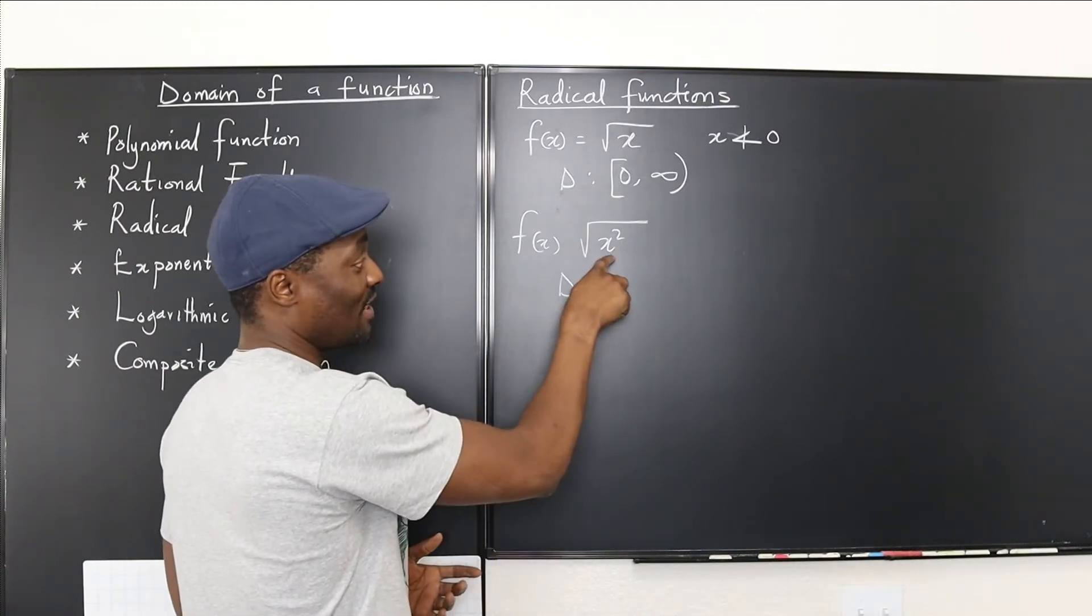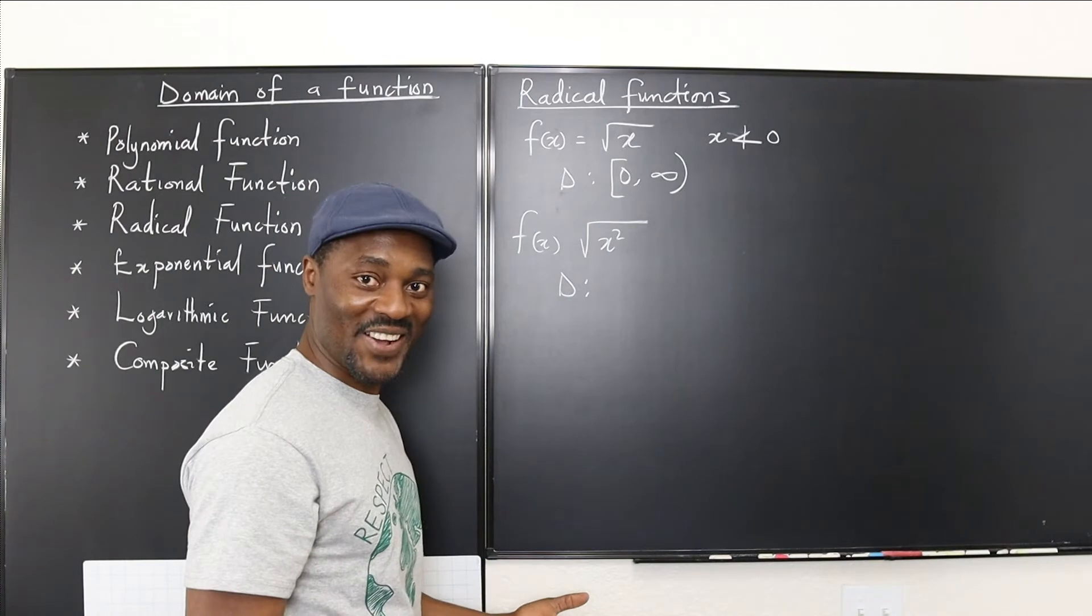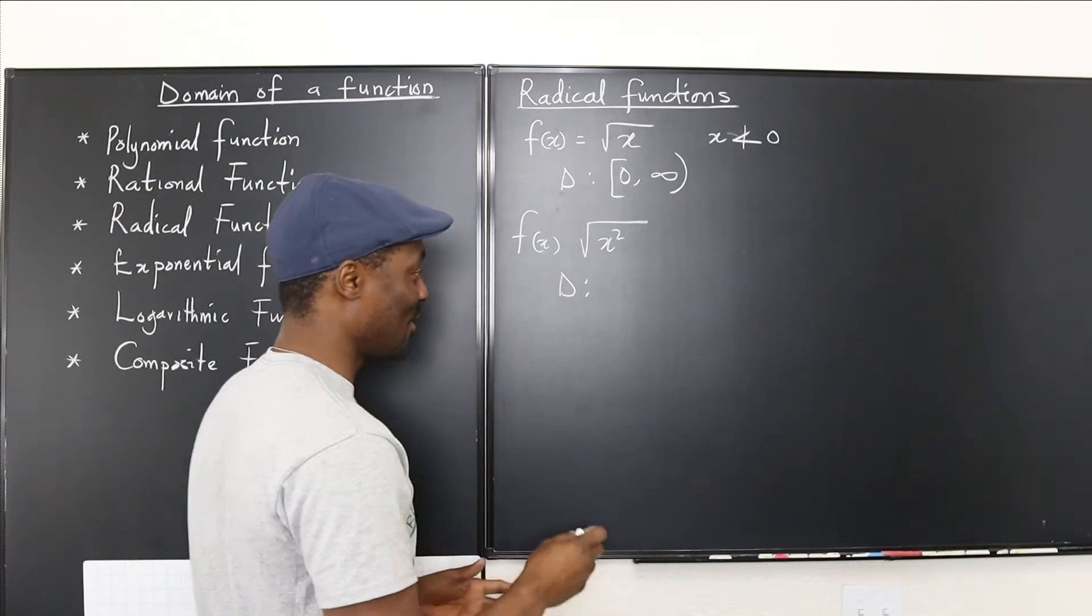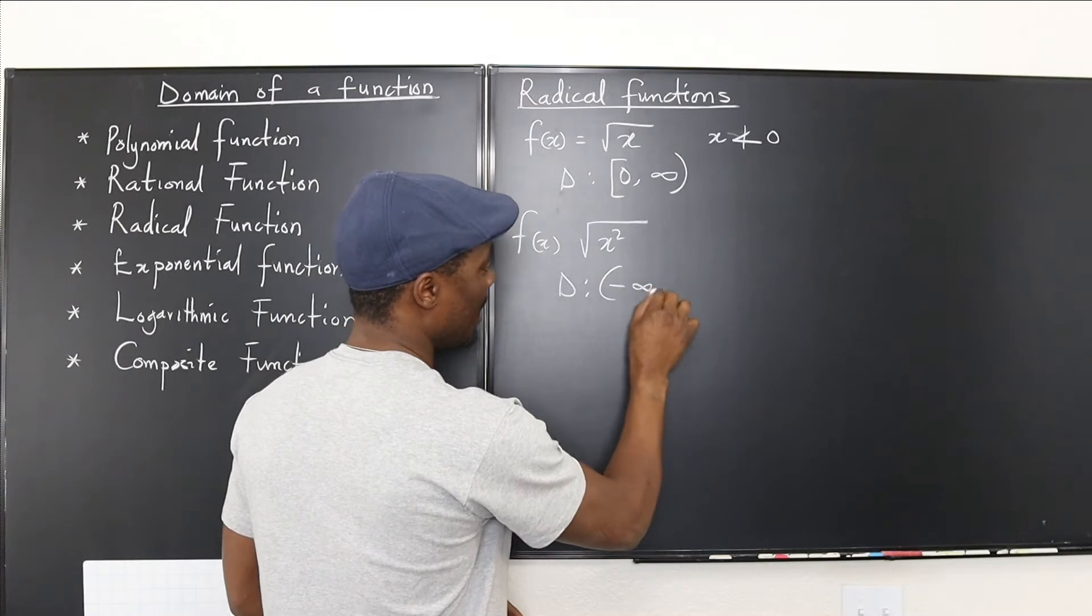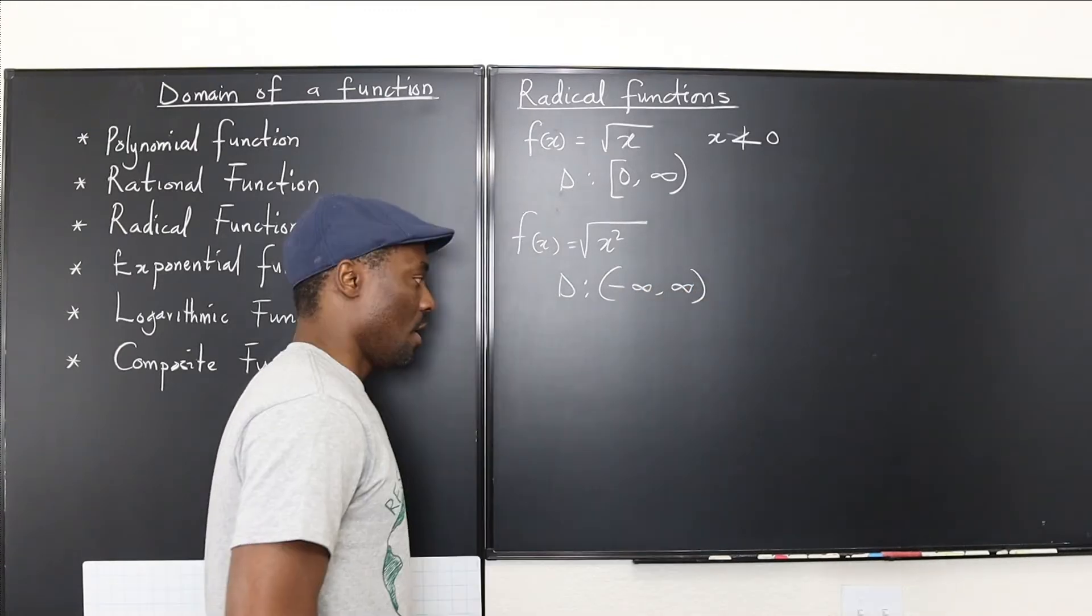So this is different, because again, when you take the square root of x squared, it's going to be x. I'm going to make it a bit more complicated as we go on, so this will be the set of negative infinity to positive infinity.